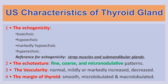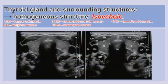Another important factor is the margin of the thyroid gland, which may be smooth, microlobulated, or macrolobulated. So whenever we are doing an ultrasound and making a report, we should at minimum address the echogenicity, the ecotexture, the vascularity, and the margin of the thyroid gland.